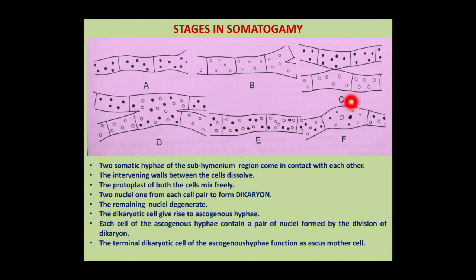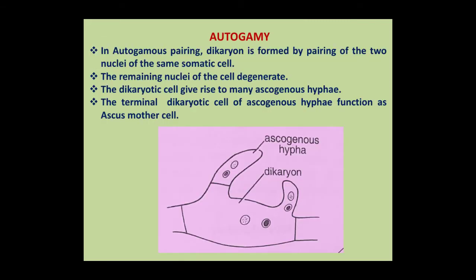This dikaryon cell gives rise to many ascogenous hyphae, and the tip of these ascogenous hyphae functions as the ascus mother cell. In autogamy (auto means self), the dikaryon is formed by pairing of two nuclei of the same somatic cell; the remaining nuclei degenerate. This cell then gives rise to ascogenous hyphae, and the terminal cell functions as the ascus mother cell.